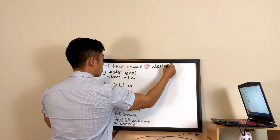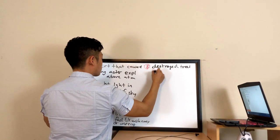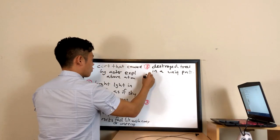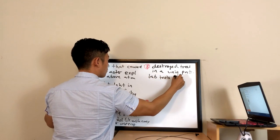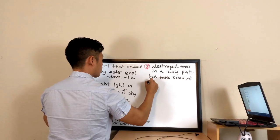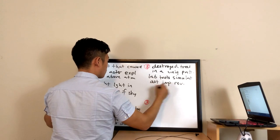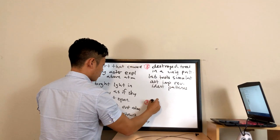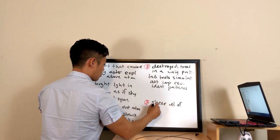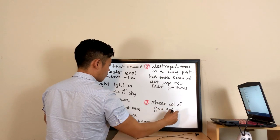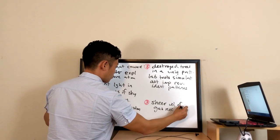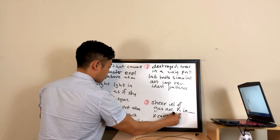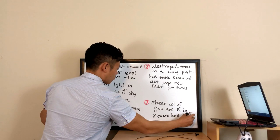The explosion destroyed trees in a unique pattern for 50 kilometers around: trees directly below were still standing but had lost their branches and bark, while those further away were knocked flat. Russian laboratory tests simulating an asteroid explosion revealed identical patterns of destruction. Additionally, the professor notes the implausibility of a methane gas explosion — the sheer volume of gas required for an explosion of that size was simply never present in the area. And if there had been a gas explosion, there would have been fires nearby, but no eyewitnesses reported any fires burning in the forests.